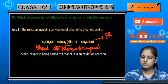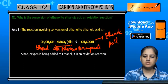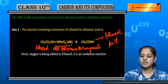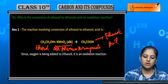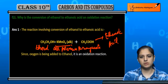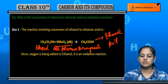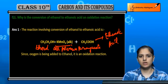This is ethanoic acid. You can see that ethanol has one oxygen, and ethanoic acid has two oxygens. So oxygen is added to ethanol to form ethanoic acid. The addition of oxygen is called an oxidation reaction — this is why the conversion of ethanol to ethanoic acid is an oxidation reaction.